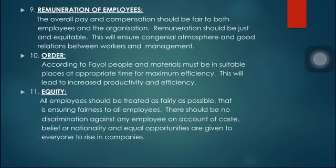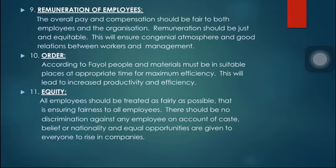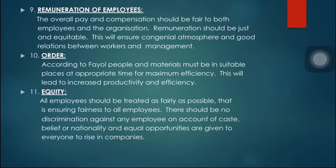For example, raw materials, machines, and workers involved in the production process should be present in the production unit. Similarly, employees taking care of administrative tasks should be placed in their respective positions. This way we can avoid unnecessary movements of men, machines, and materials, thereby increasing efficiency in production and throughout the organization.